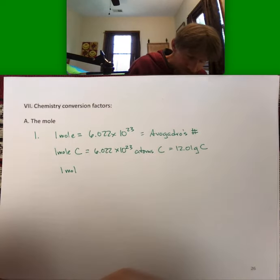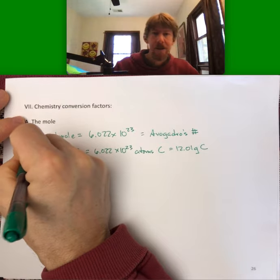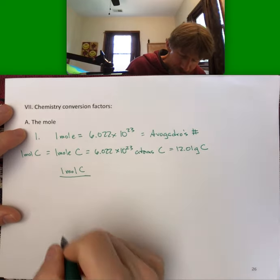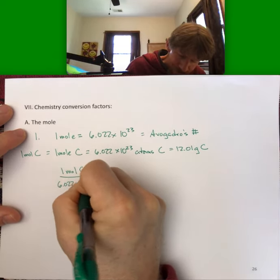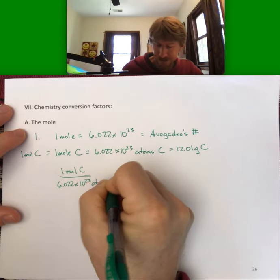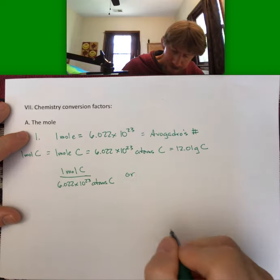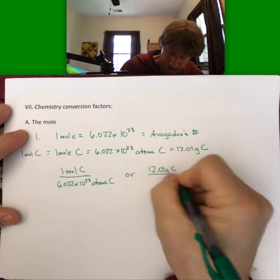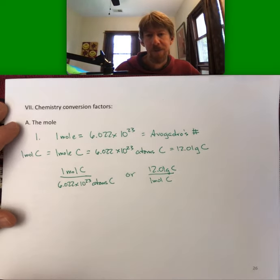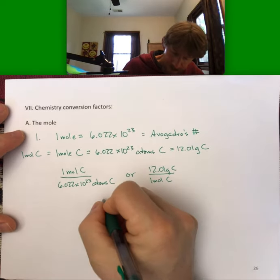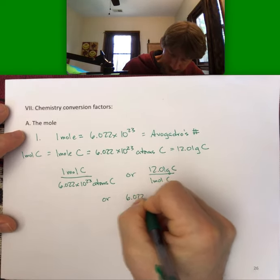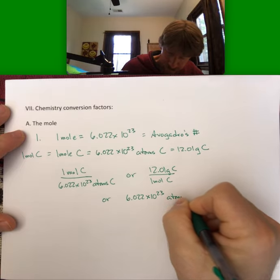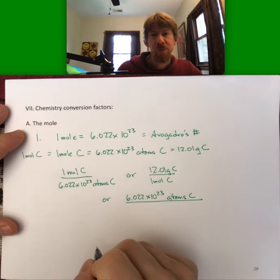So one mole carbon per 6.022 times 10 to the 23rd atoms carbon, per 1 mole carbon, or 6.022 times 10 to the 23rd atoms carbon per 12.01 grams carbon.